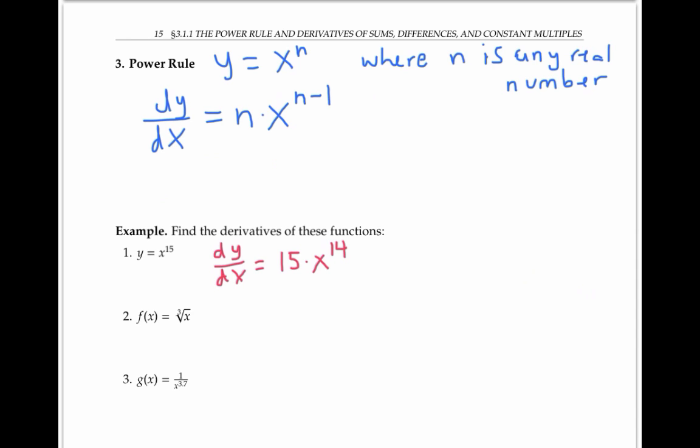The second example, f(x) equals the cube root of x, might not immediately look like an example where we can apply the power rule. But if we rewrite it in exponential notation as x to the 1/3, now we can apply the power rule. We bring the 1/3 down, multiply it on the front, and we reduce the exponent by 1. Well, 1/3 minus 1 is negative 2/3. So we found the derivative using the power rule. We could rewrite it if we want using exponent rules as 1 over 3x to the 2/3. Either answer is good.